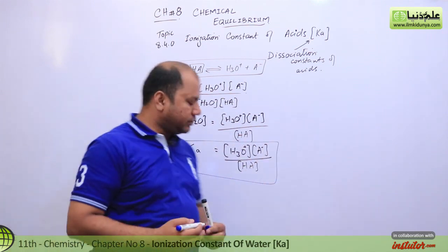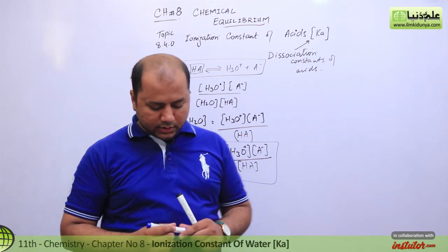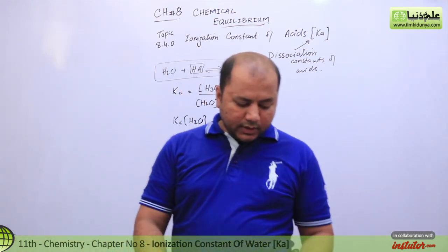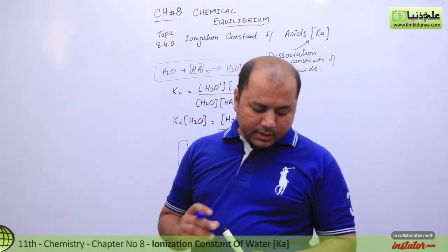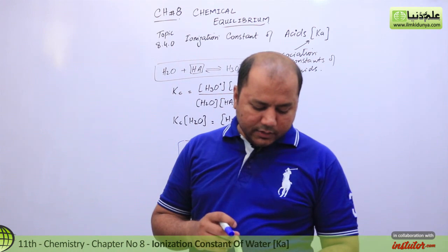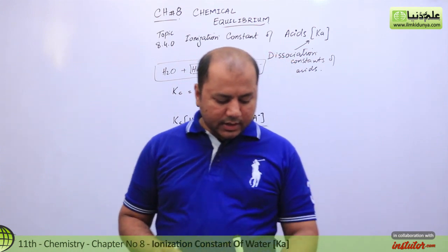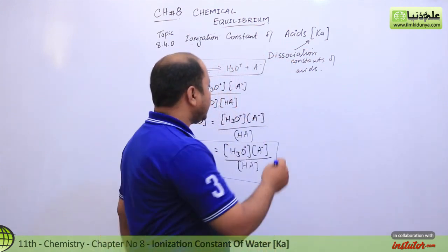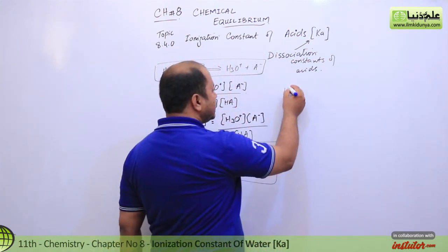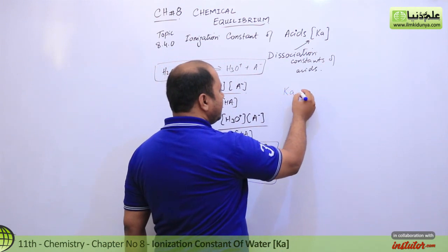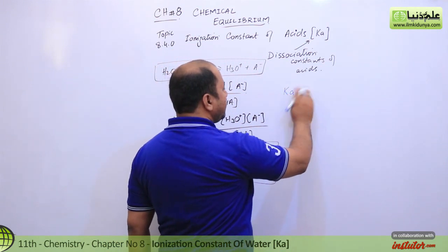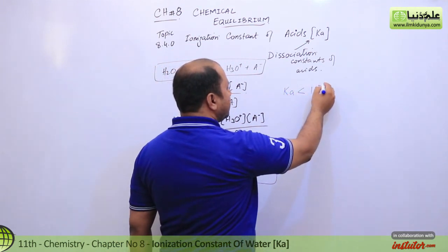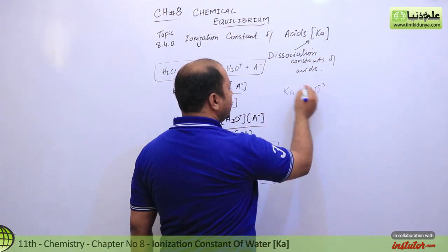Now we will use the formula and try to calculate values. If Ka is less than 10 to the power negative 3, then the acid is weak. So we will consider: if the value of Ka is greater than 10 to the power negative 3, the acid becomes stronger.